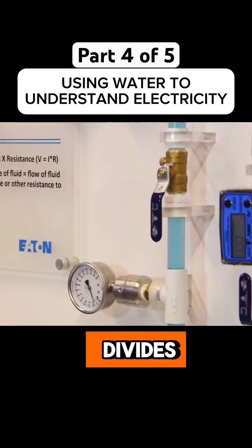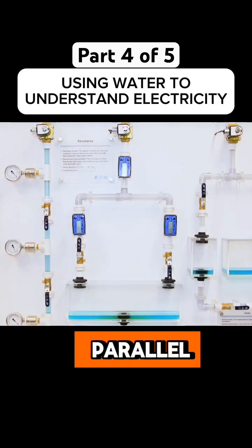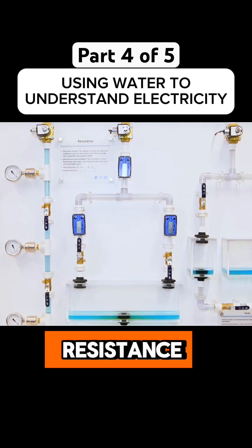In series, voltage divides according to the resistance. In parallel, current divides according to the resistance.